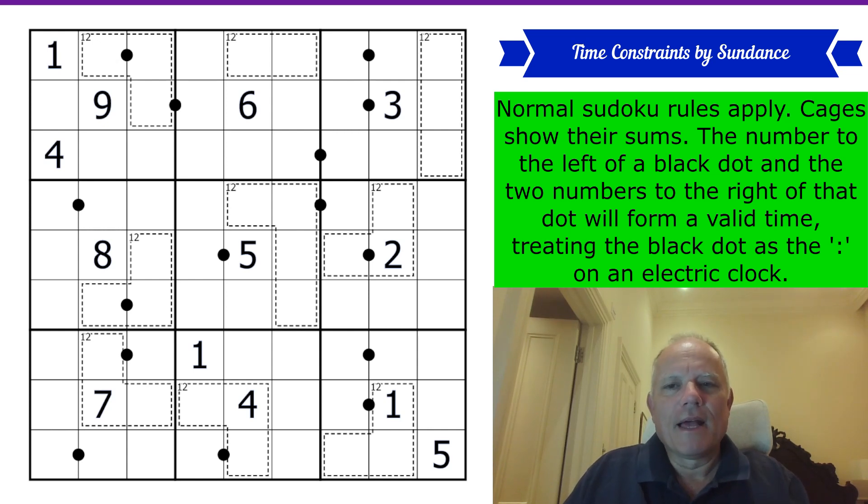Normal Sudoku rules apply. Cages show their sums. Look, they're all 12, which I suppose is because that's the number of numbers on a clock. The number to the left of a black dot and the two numbers to the right of that dot will form a valid time.